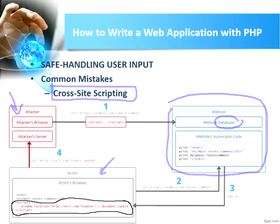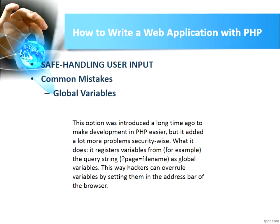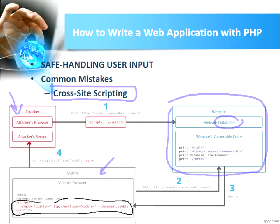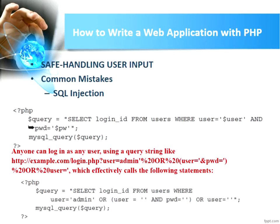In the first part of this chapter, we discussed the different mistakes: global variables, cross-site scripting, and SQL injection. For SQL injection, the attacker writes an SQL code instead of a login name, which gets injected into the PHP query.